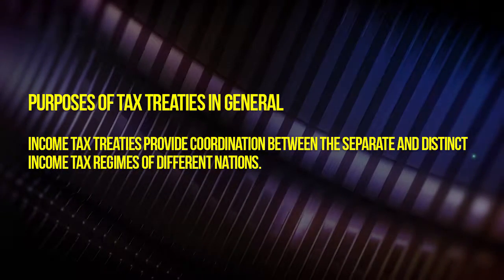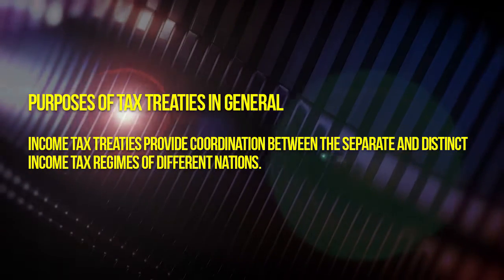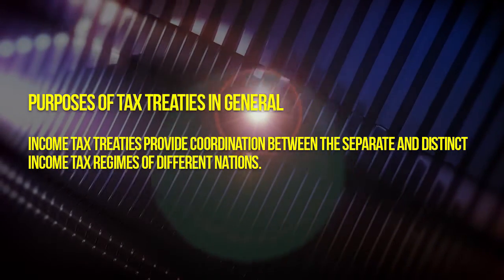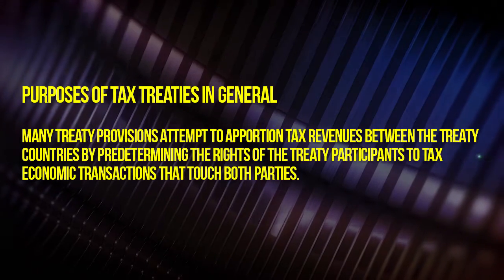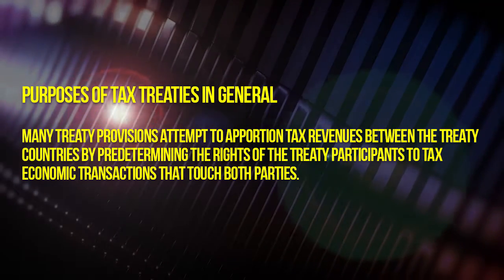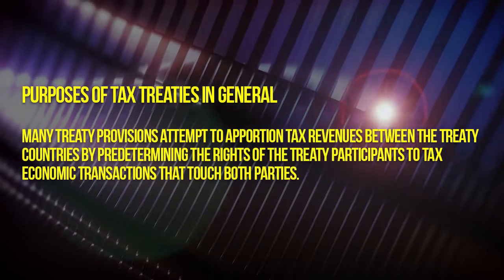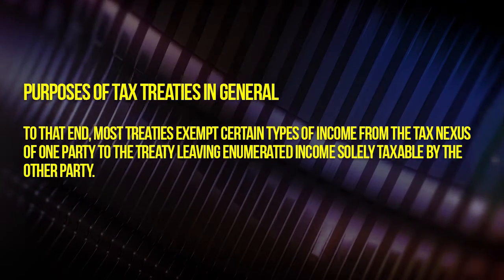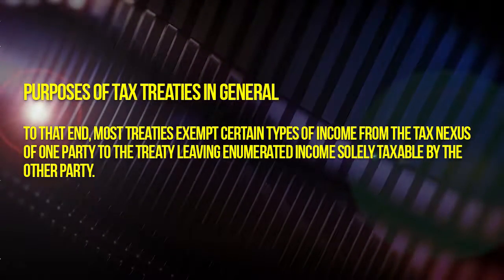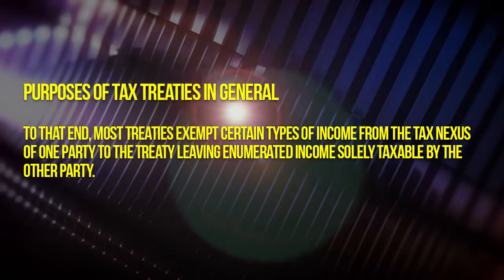Income tax treaties also provide coordination between the separate distinct taxing regimes of the two different countries. Many treaty provisions are designed to apportion or allocate out the tax ramifications of transactions that are known to impact both jurisdictions. To this end, many treaties try and establish clauses where income is only taxable to one jurisdiction and not to the other.